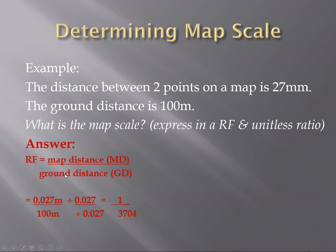So we can go ground distance multiplied by 1. So it'd be 100 times 1 divided by the 27 millimeters, and that will give us 3704. So that will be how we get that answer and if we want to show it in a ratio we go 1 to 3704.